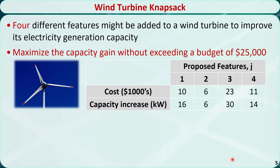Let's check another example that belongs to the type of knapsack problems — it doesn't have anything to do with real knapsacks though. A wind turbine's electricity generation capacity can be increased by adding four different features.